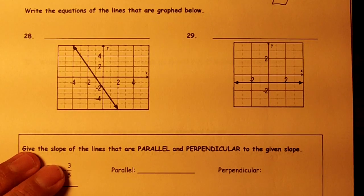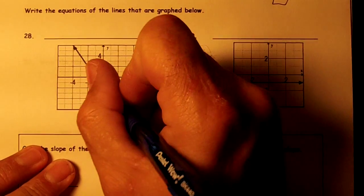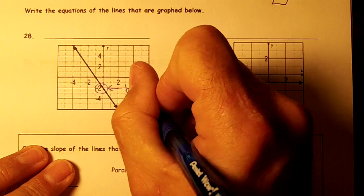Write the equation of the lines that are graphed below. Okay, on this one we're going to do y. We're going to find the y-intercept. The y-intercept's right here. So the y-intercept's negative 2.